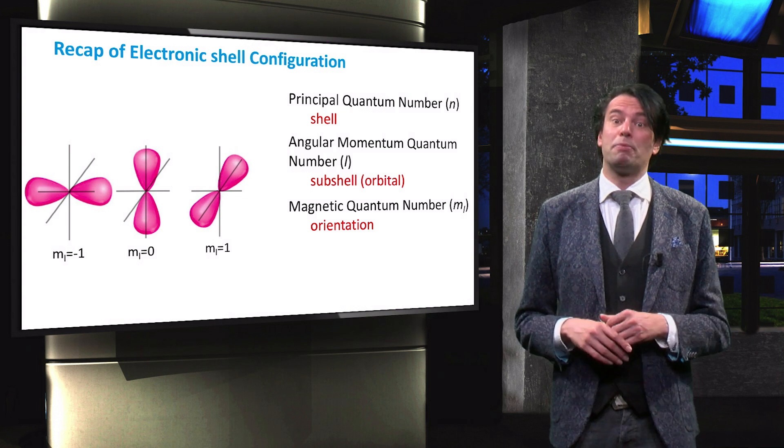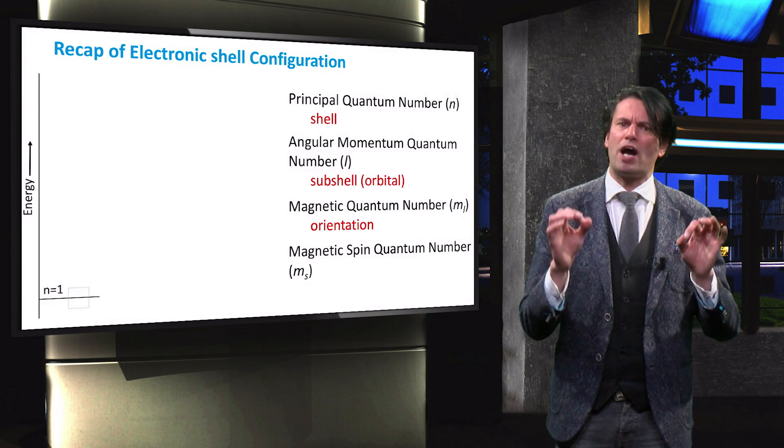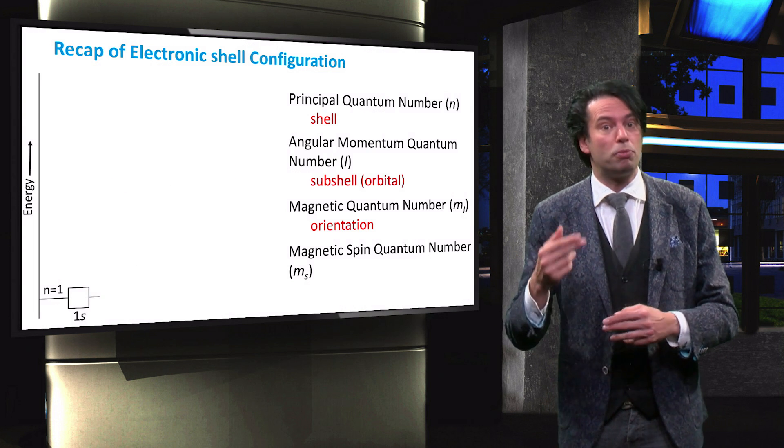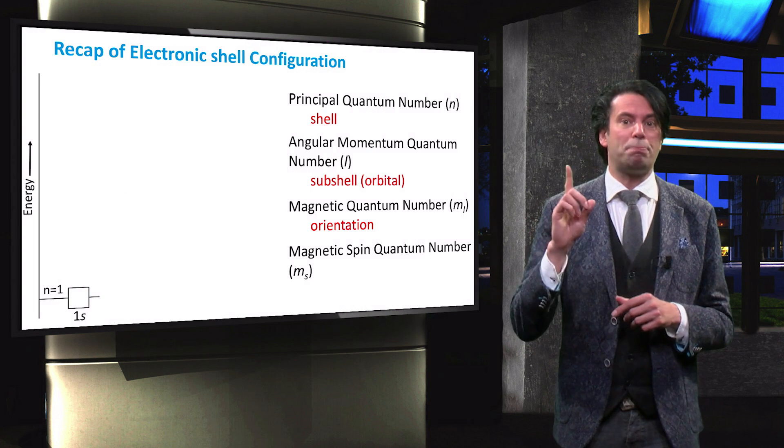Finally, the magnetic spin quantum number describes the spin of an electron in an orbital, which can either be up or down.